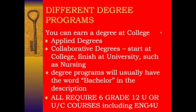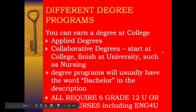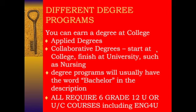Many colleges offer degrees — some are applied degrees, some are collaborative degrees such as the nursing program I described. When you're looking at a college program, if the word 'bachelor' is in the description, it's going to be a degree-granting program. But you also need to know it's going to have the same requirements as a university program — it will still need those six Grade 12 U or UC courses. When doing your research, if the word 'bachelor' is in the program description, it's a degree-granting program at college.